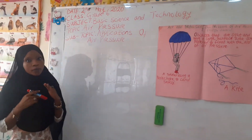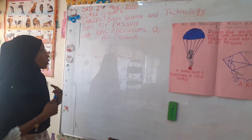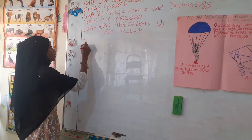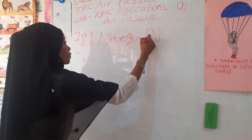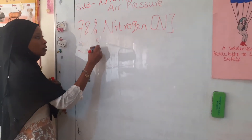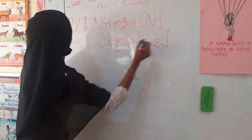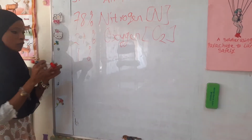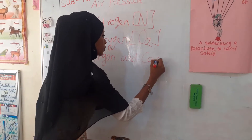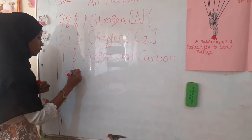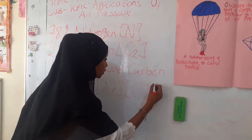Air consists of tiny molecules — very small particles that we cannot see — that cover the surface of the earth. It is comprised of 78% nitrogen, 21% oxygen, and the remaining 1% is mostly argon (Ar) and carbon dioxide (CO₂).